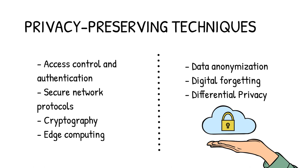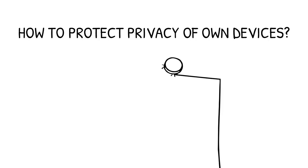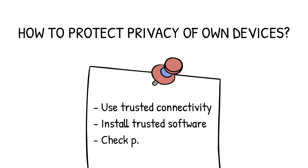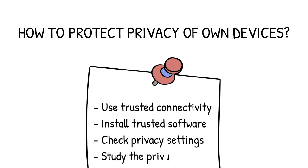The best thing we can do right now is to educate ourselves about what IoT is and study its potential impact on our lives. Here are the main recommendations on how users can protect privacy of IoT devices: use trusted connectivity, install trusted software, check privacy settings and study the privacy policy. The privacy policy should detail what a company is going to do with your data, and one has a right to understand what happens to the information and whether a company shares any personal data with third parties.